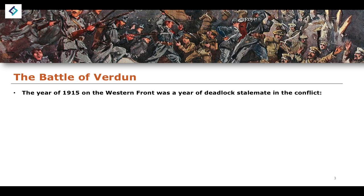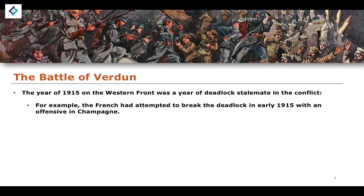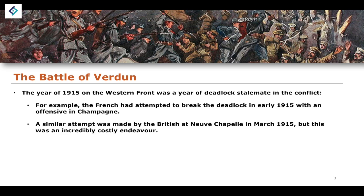The Battle of Verdun can be characterised as the point at which we're looking at trying to break a deadlock and stalemate in the conflict. In 1915, on the Western Front, this was a year of deadlock and stalemate. The stalemate set in at the end of 1914, and from 1915 to 1916 there were attempts to break it. The French campaign attempted to break the deadlock in early 1915 in an offensive in Champagne, but failed. At Neuve-Chapelle in March 1915, the British also tried to break the stalemate — an incredibly costly endeavour that also failed.